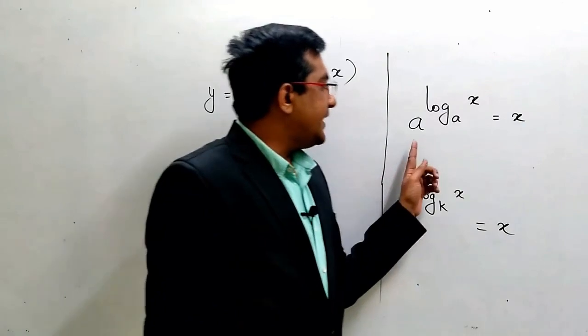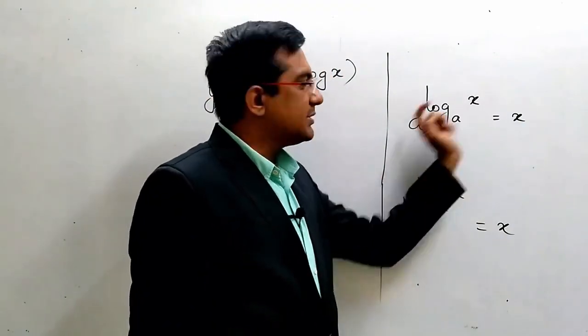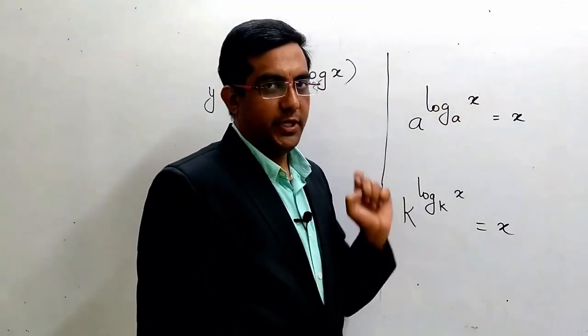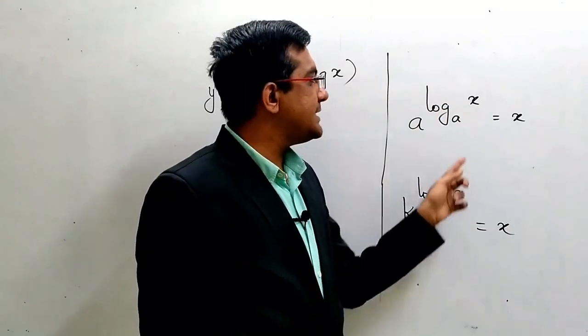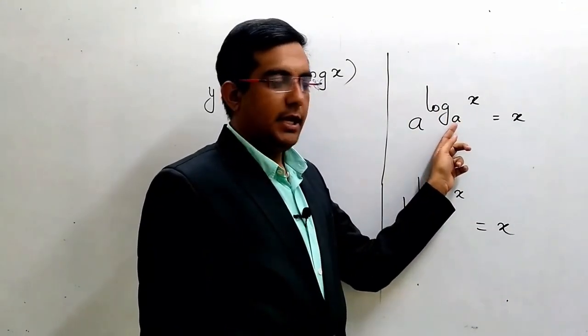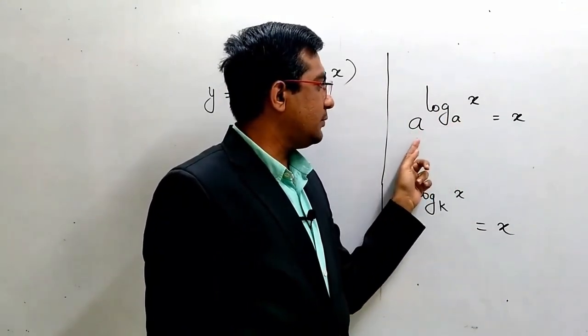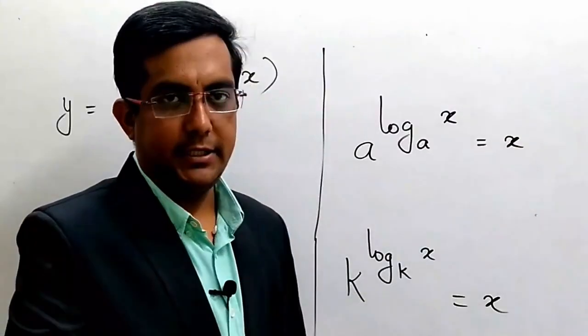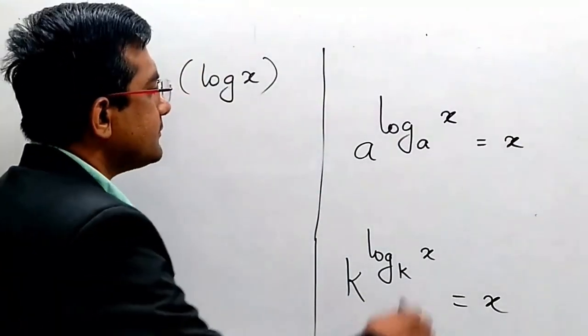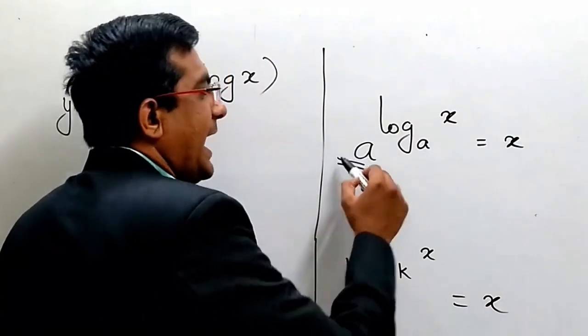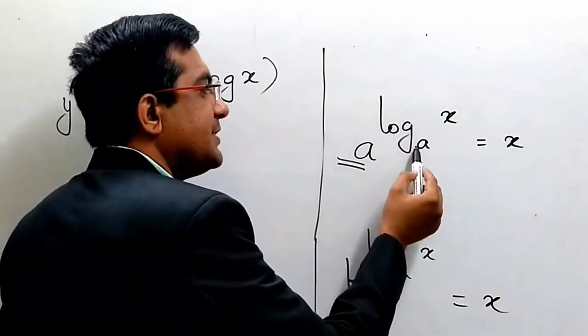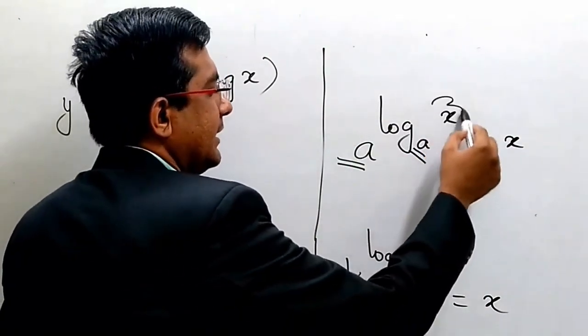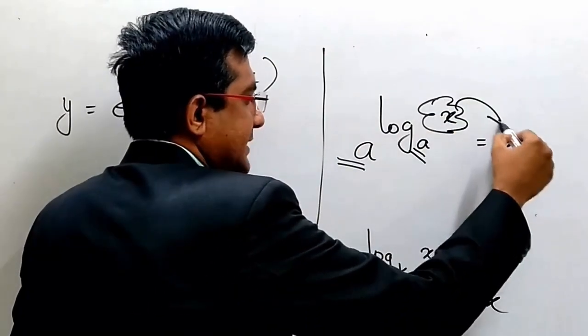So basically, whenever there is a number and its power in log, there is a number and its power in log which is the base and number as a base.